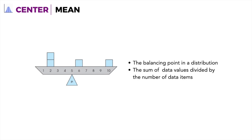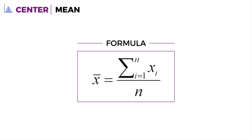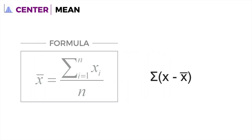When I say it is the balancing point in a distribution, it means that when you subtract the mean from the different values and add up all of these differences, you get 0. You know you got the right mean when the summation of x minus the mean equals 0.